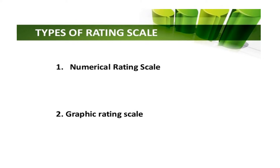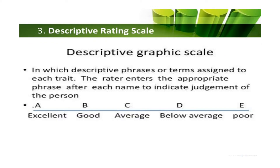The types of rating scale include numerical rating scale, graphic rating scale, and descriptive rating scale. In the descriptive rating scale, certain phrases or terms are assigned to a trait. The writer enters the appropriate phrase after each name to indicate judgment — for example, rating a student's performance as excellent, good, average, below average, or poor.